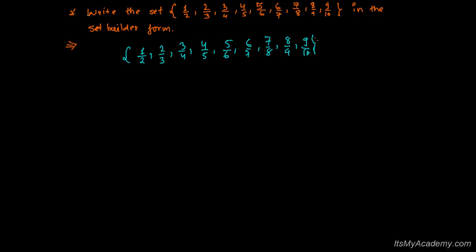While I was writing, many of your brains might have already figured out how to do this question. Whenever I was writing the numerator, I was getting one more in the numerator — like 2 then 3, just one more is there; 3 then one more is 4; 4 then 4 plus 1 is 5. It was like this: 5, 6; 6 then 7; 7 then 8; 8 then 9; 9 then 10.